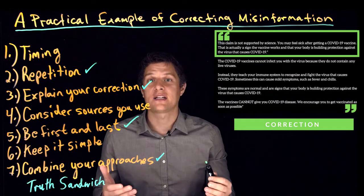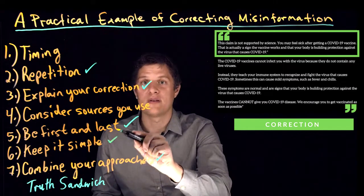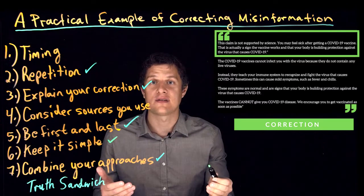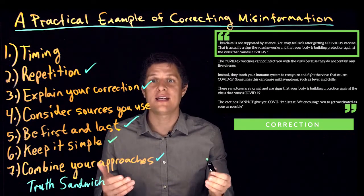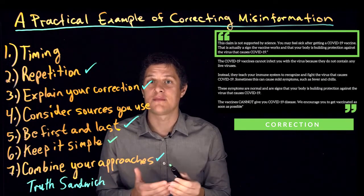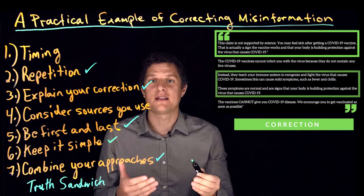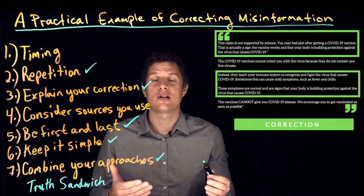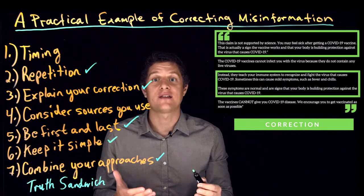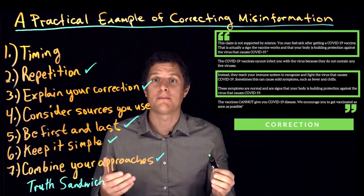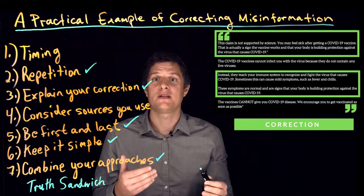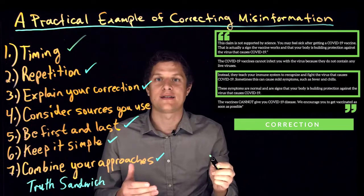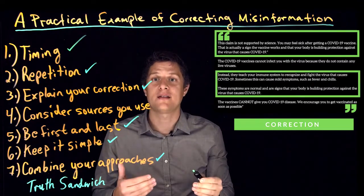Lastly, it explains a complex issue with simple words in relatively few sentences. It explains that people can get some symptoms such as fever or chills, but that those symptoms are considered normal, generally mild, and a sign that the vaccine is working.